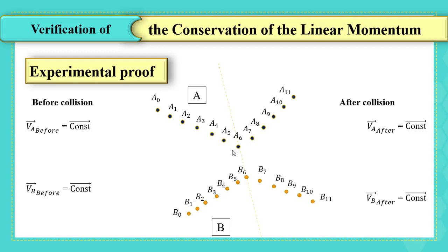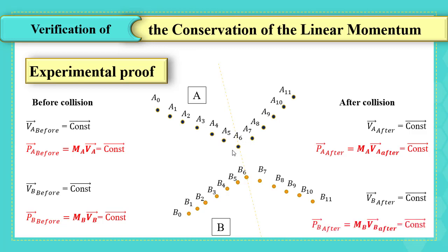What is the purpose then? We can then calculate the linear momentum of each puck as P A before as a vector equals to MA times VA vector, which is a constant vector. P B before equals to MB times VB vector equals to also constant vector. P A after equals to MA times VA after as a vector, it is a constant vector. P B after also as a vector equals to MB times VB after as a vector equals to a constant vector. So, all these linear momenta are constant vectors, since the velocity for each is constant.